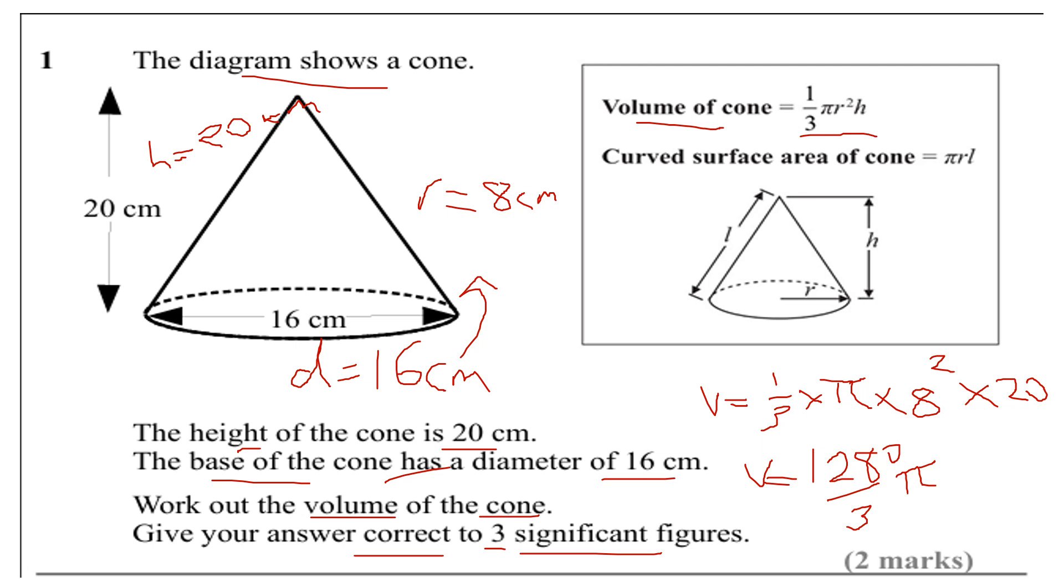Start again: 1,280 divided by 3, then we've got the π button. So that comes out as 1,340.